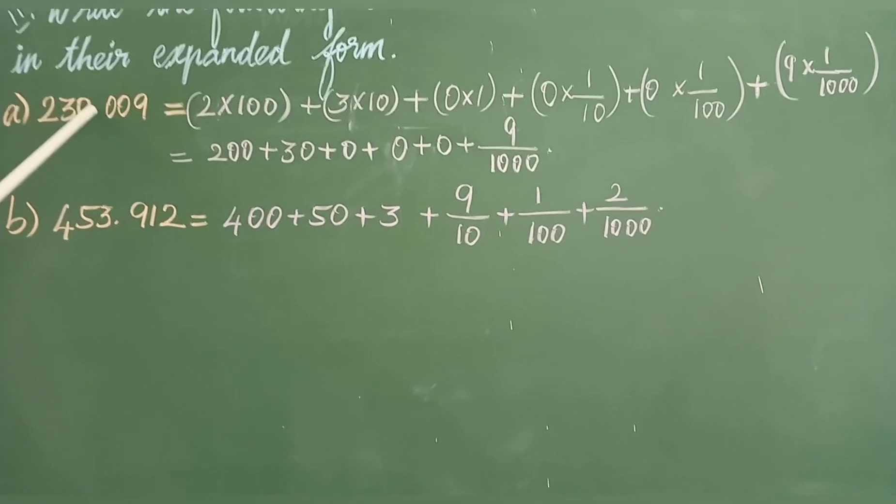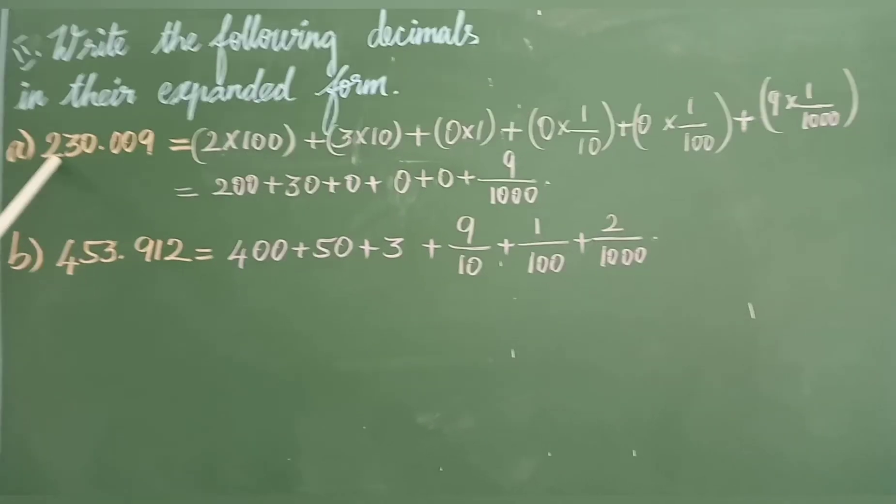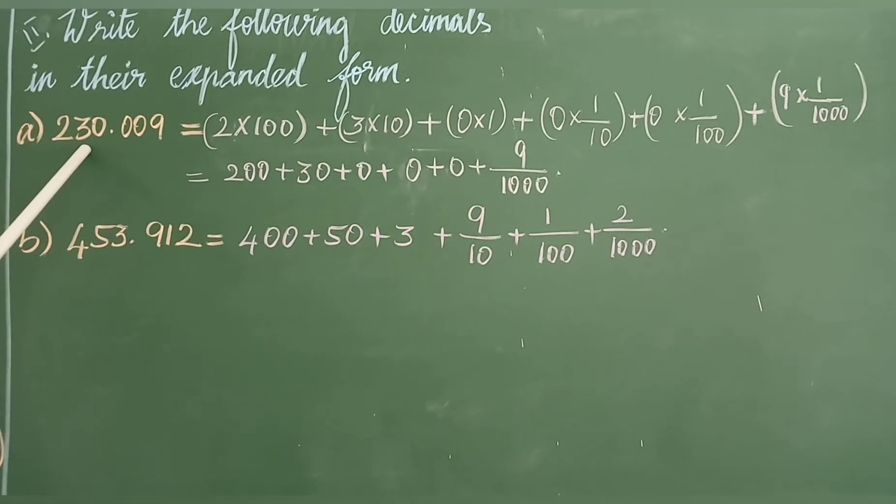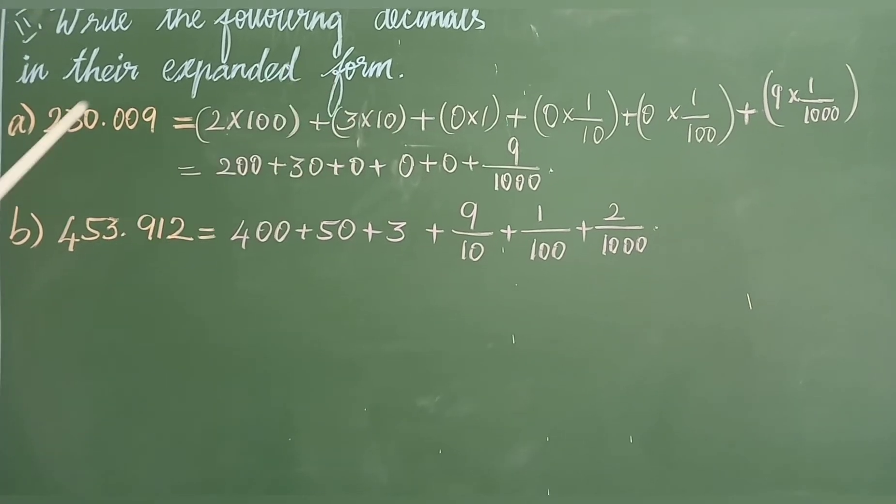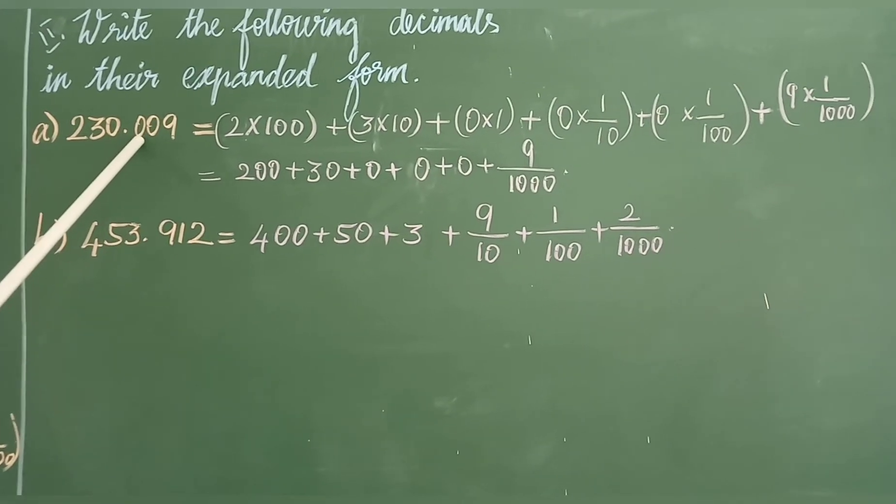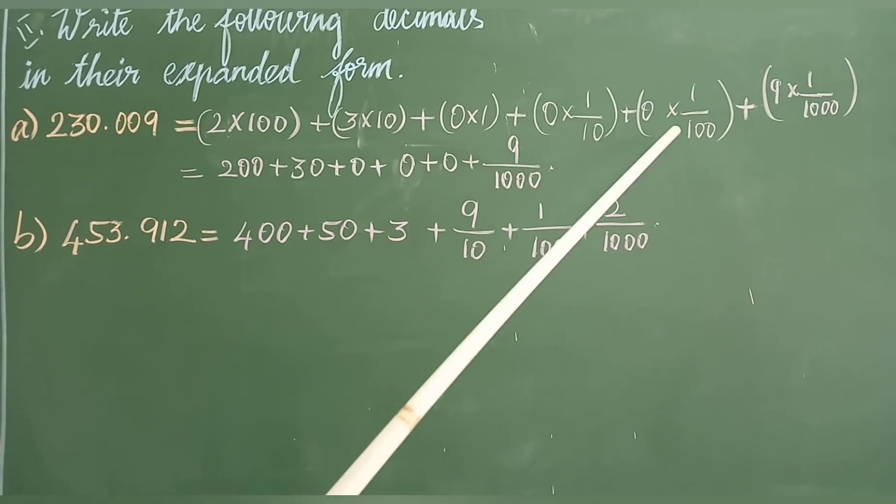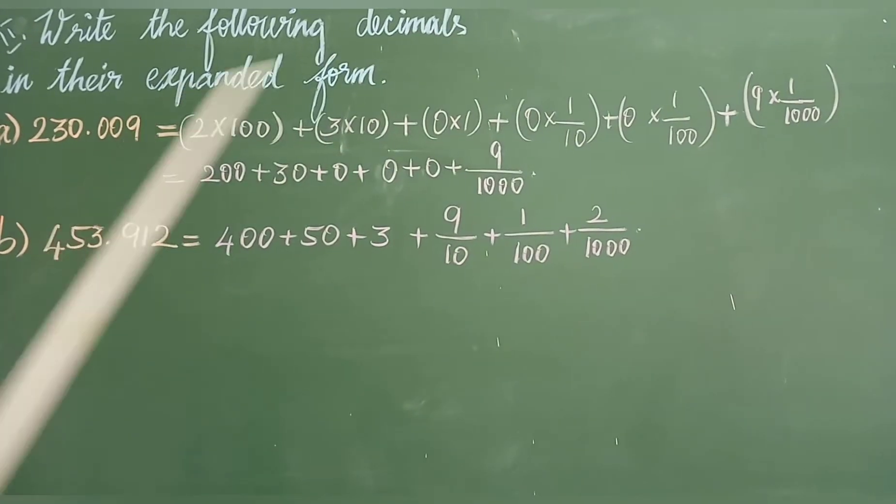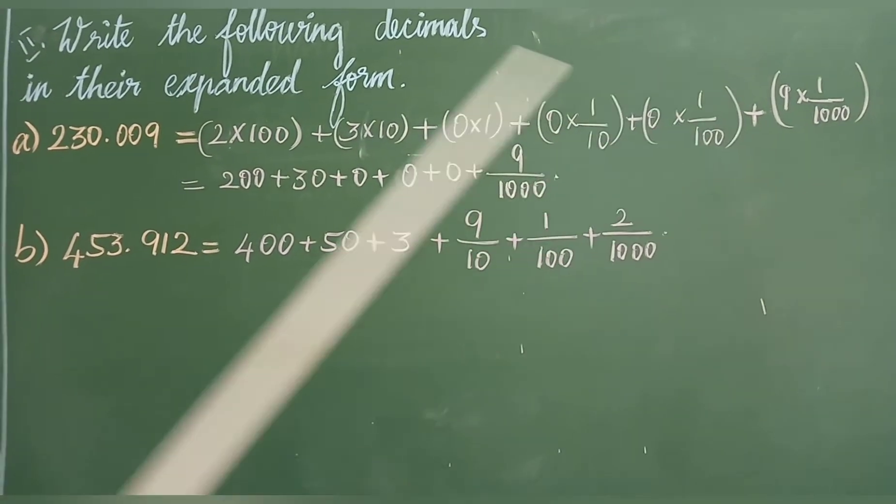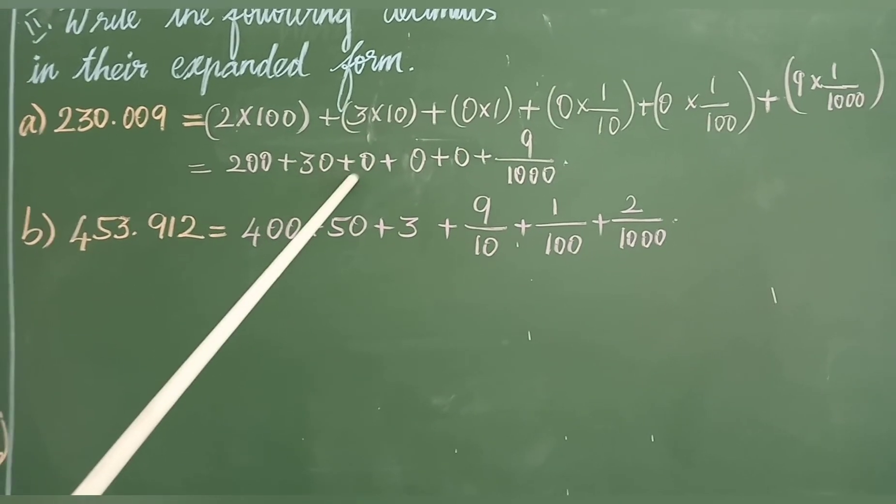Let's see the sum 230.009. First number 2, place value 100, so 2 into 100. Plus 3 into 10. Plus 0 into 1. Point: 0 into 1 by 10, plus 0 into 1 by 100, plus 9 into 1 by 1000. This equals 200 plus 30 plus 0 plus 0 plus 0 plus 9 by 1000.